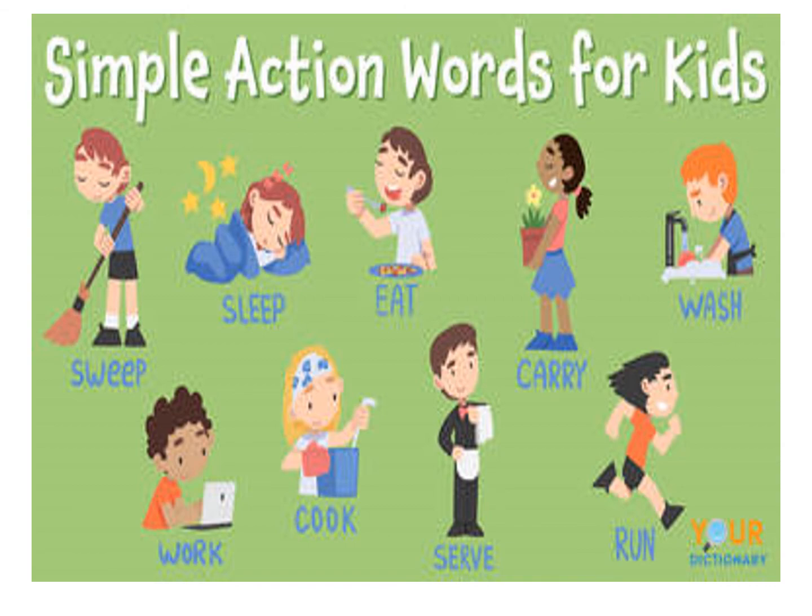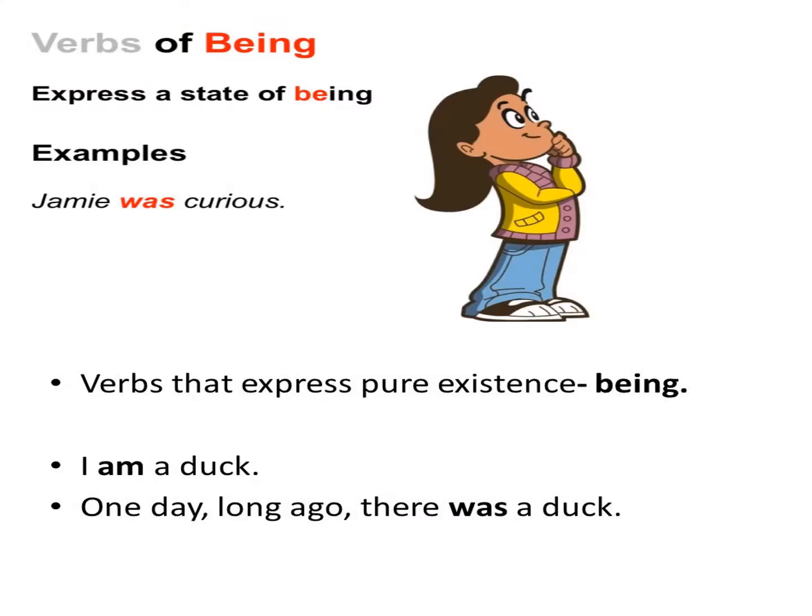Now, the second type is the being verb. What is a being verb? Being verbs define the state or situation of a subject. They define whether he is a boy or he is a girl. They are called state verbs also.